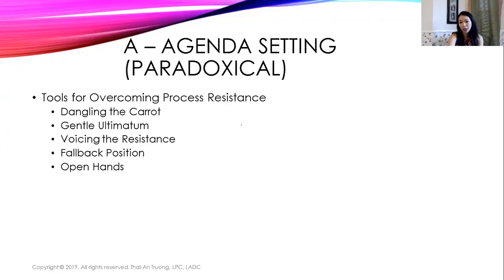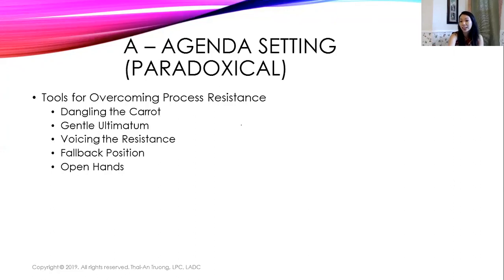If they're still resistant, you never try to convince them — it has to be in their own time. The fallback position: 'If this isn't the best time, please let me know when you're ready and I'd be happy to restart this work.' Another fallback: 'There are therapists who feel they can be effective treating this without exposure — I just don't know how to do that. I'd be happy to refer you to someone who won't require that of you. I'd be sad to see you go, but I'm happy to support you in finding a better fit.' Open hands — I respect your decision either way.